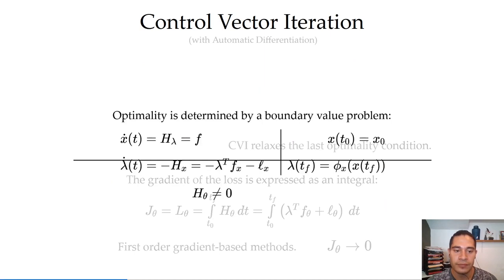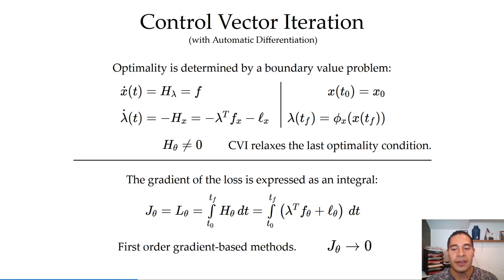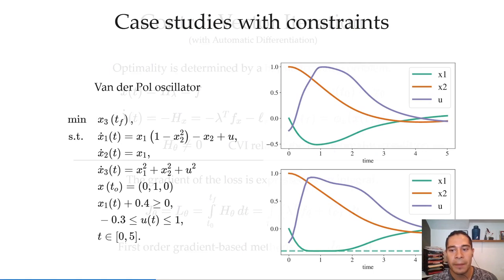The control vector iteration technique relaxes the last optimality condition, and then the gradient of loss can be expressed directly as an integral of the remaining differential equation. The procedure to solve the differential equation problem follows the neural ODE approach, taking advantage of automatic differentiation and adjoining sensitivity analysis from the Julia ecosystem to get the gradient of the loss to be further used for optimization.